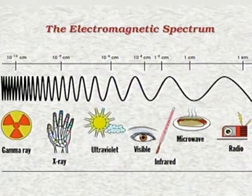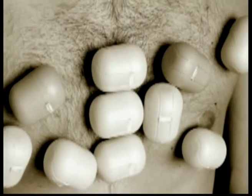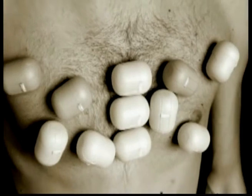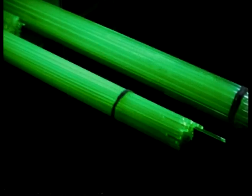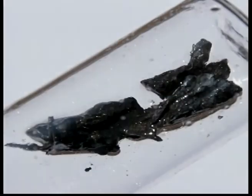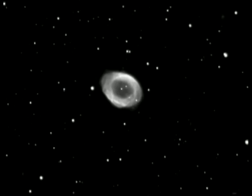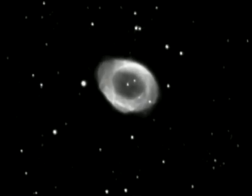Ultraviolet and infrared radiations also come along with sunlight. In our body, some radiations are generated during the decay of potassium in muscles. Very minute quantities of uranium, thorium, strontium, and carbon-14 are also present in the body. These radiations are mostly not harmful.